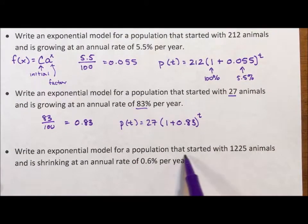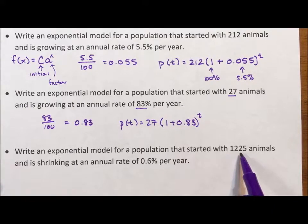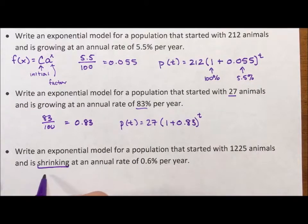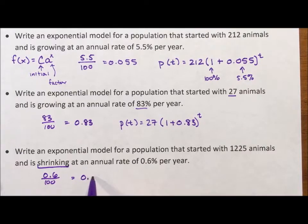Write an exponential model for the population that started with 1,225 animals and is shrinking. Shrinking means decay, we're subtracting. So we have 0.6 divided by 100 gives us 0.006.